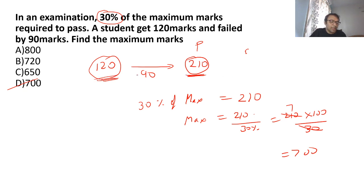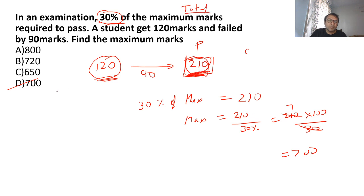Passing marks 210 will be some percentage of the total marks, so the total marks should be a multiple of 7 only then will you get 210 as a multiple of 7. 30% of total marks is the passing marks, so you can make out 700 is the answer. Note: the multiple of 3 shortcut doesn't apply here because 7 comes from 210, not from 30.